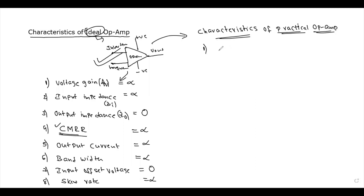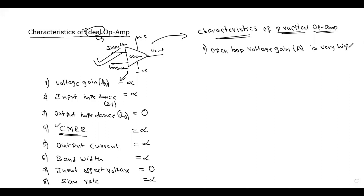First characteristic of practical op-amp: open loop voltage gain. Open loop voltage gain, which is denoted with capital A, is very high.